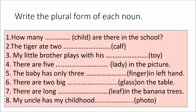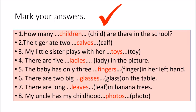We will do another activity. Write the plural form of each noun. Here you have to recall what you learned so far. Check your answers: How many children are there in the school? The tiger ate two cubs. My little sister plays with her toys. There are five ladies in the picture. The baby has only three fingers in her left hand. There are two big glasses on the table. There are long leaves in the banana trees.